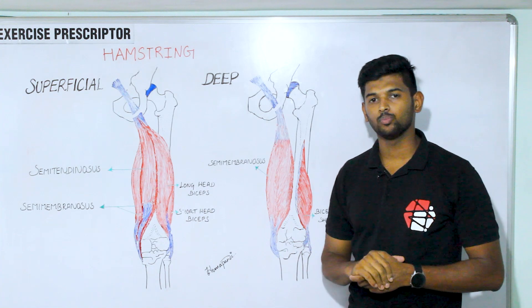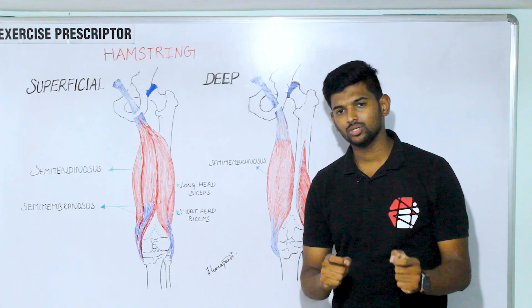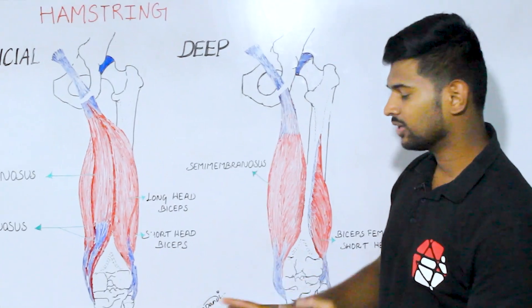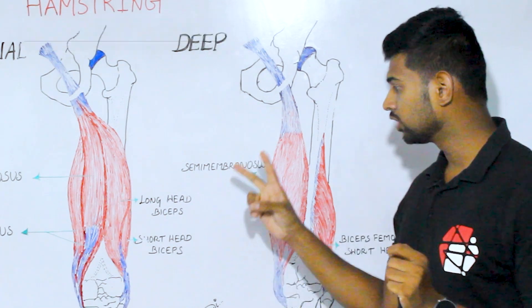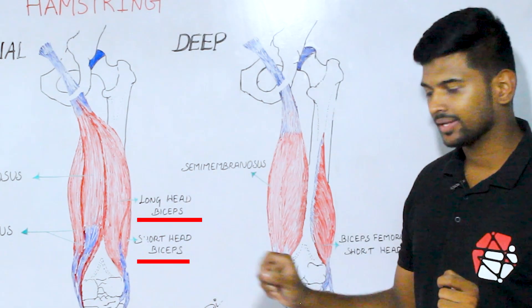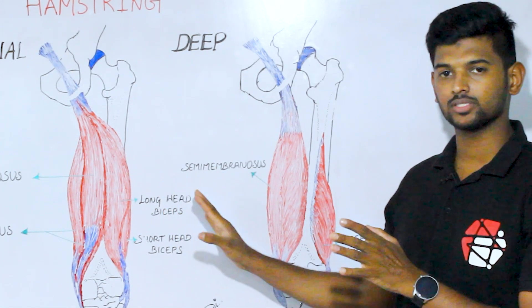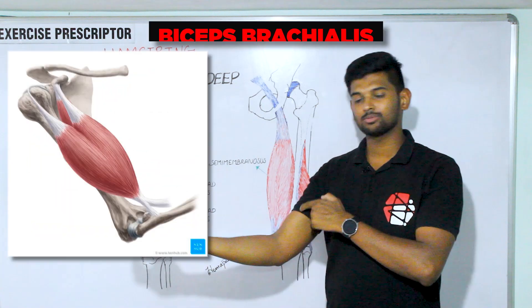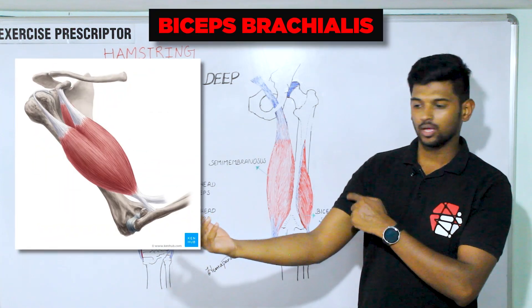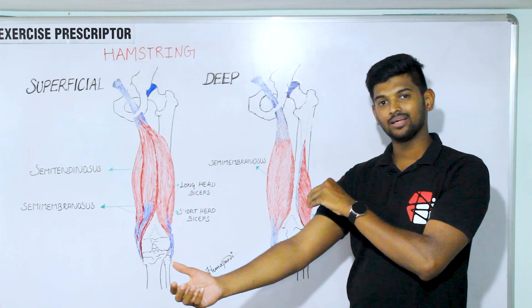As usual, we'll start with naming. Why is the muscle called biceps femoris? Because it has two heads — long head and short head. Two heads means 'biceps,' and it is situated in the femoral region, so this muscle is called biceps femoris. Similarly, the biceps brachii also has two heads and is situated over the brachial region, so it is called biceps brachii.